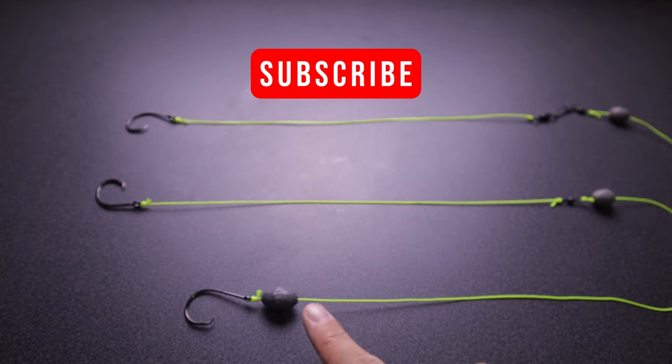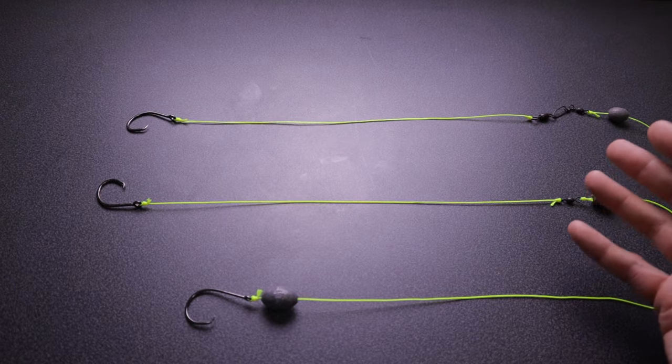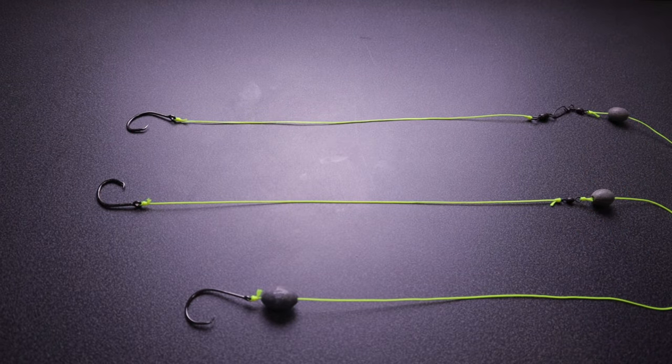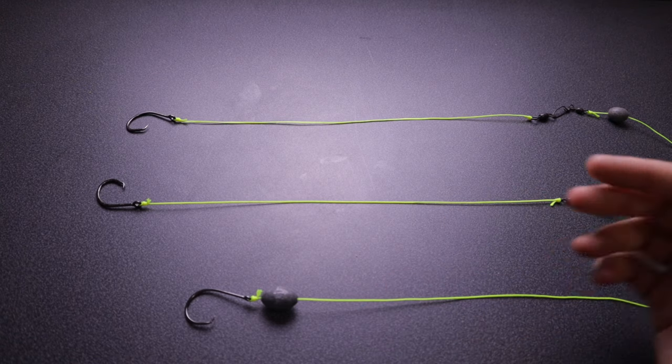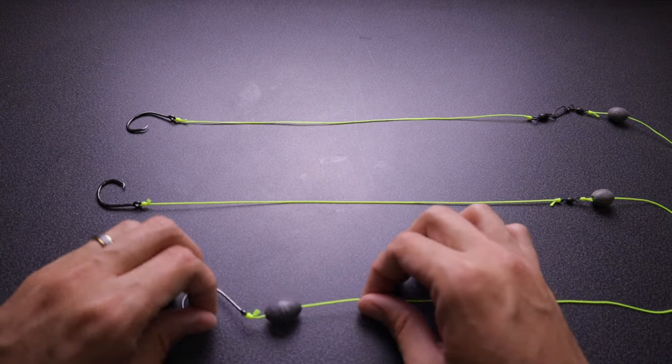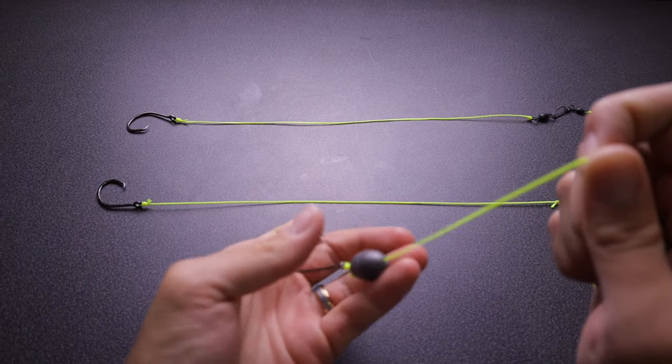Alright guys, first things first, these weights and lines are for demonstration purposes only. Obviously this isn't the exact line we use when targeting grouper, but for visual purposes I wanted to tie these to show you what we use for our grouper rigs.